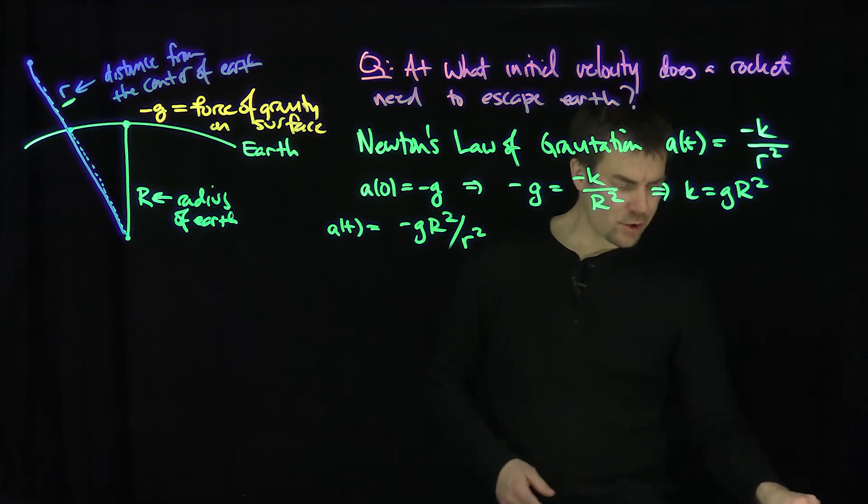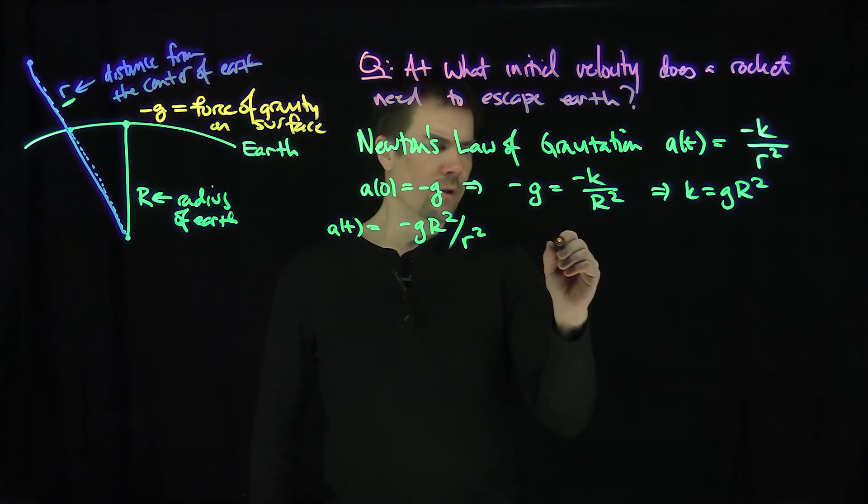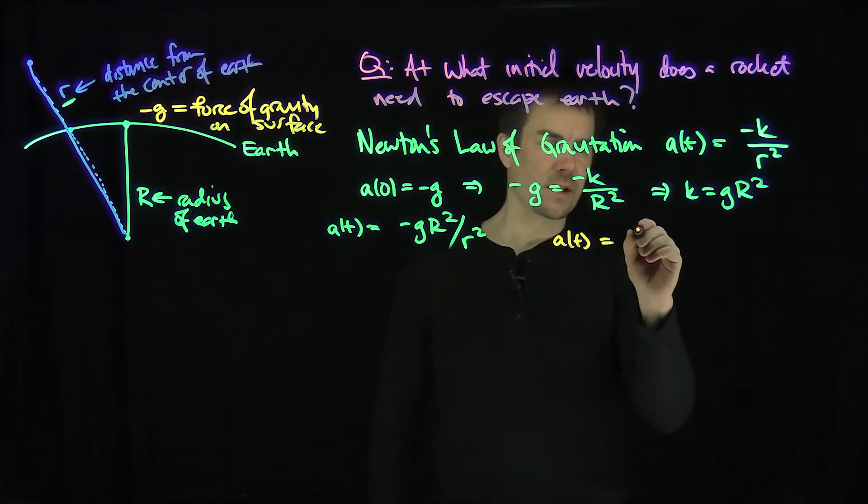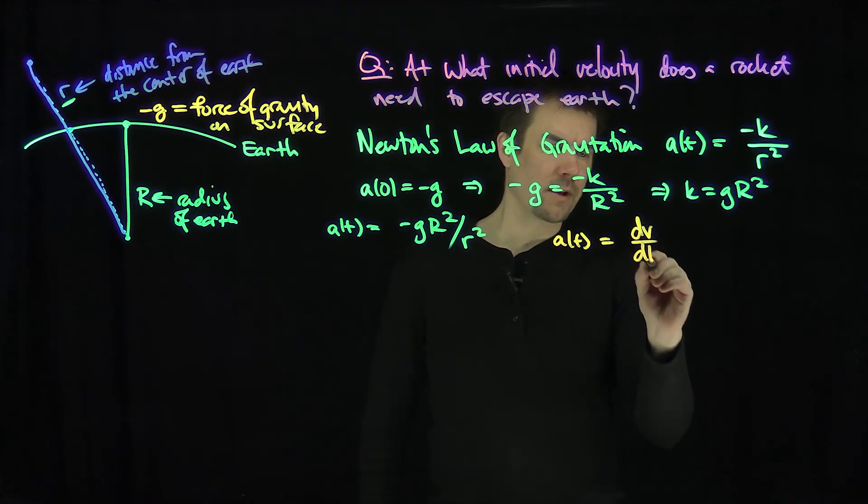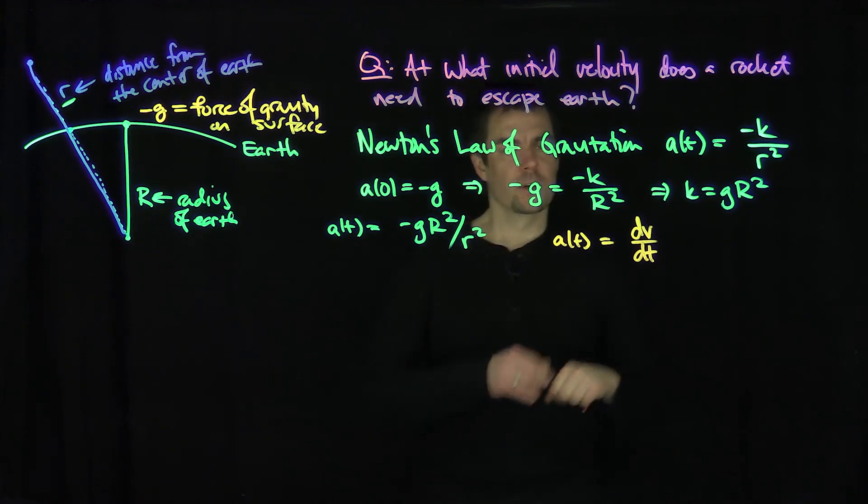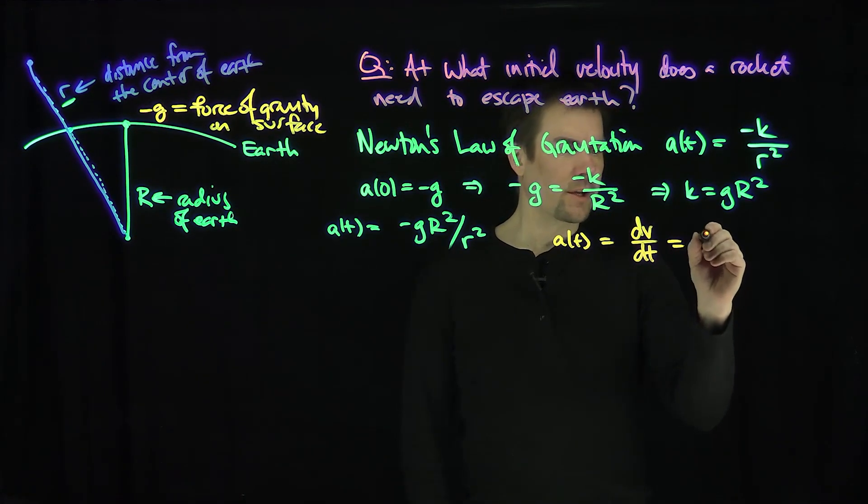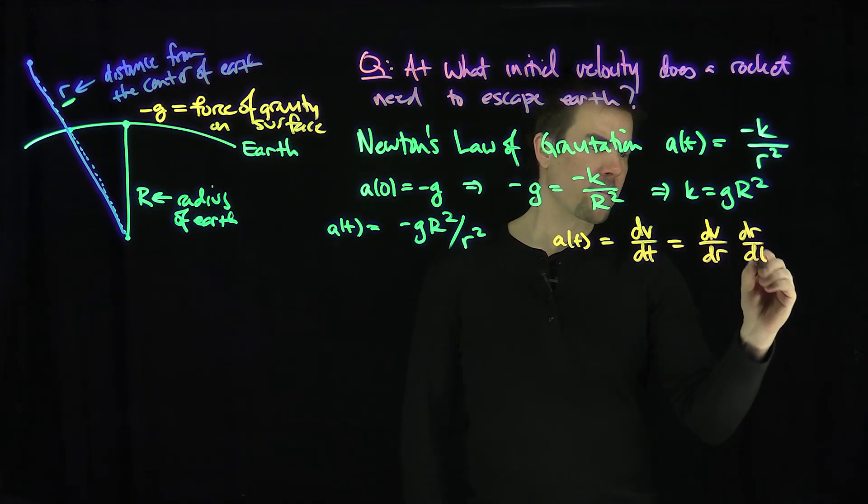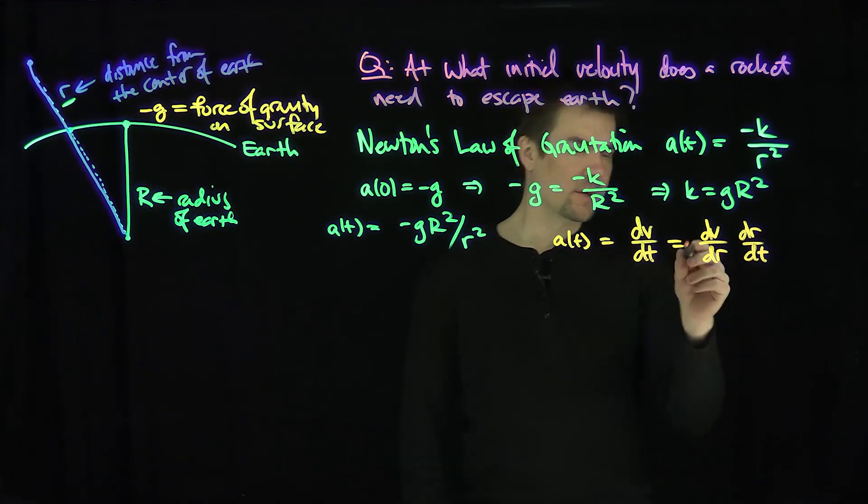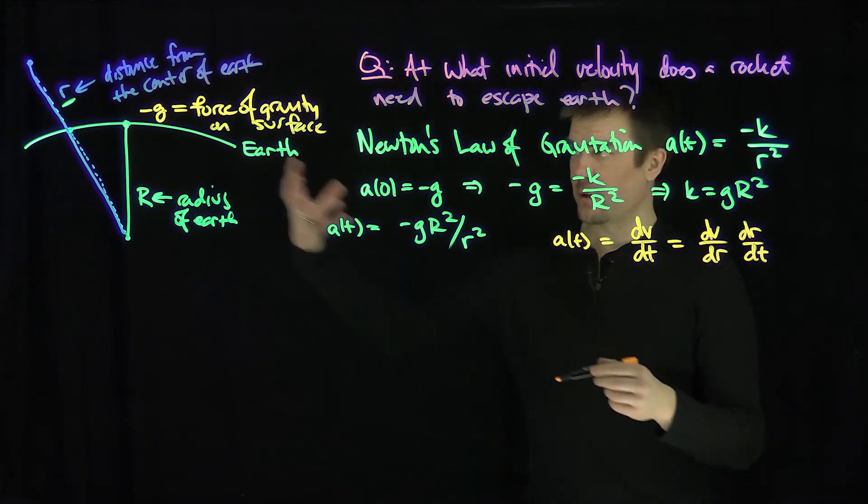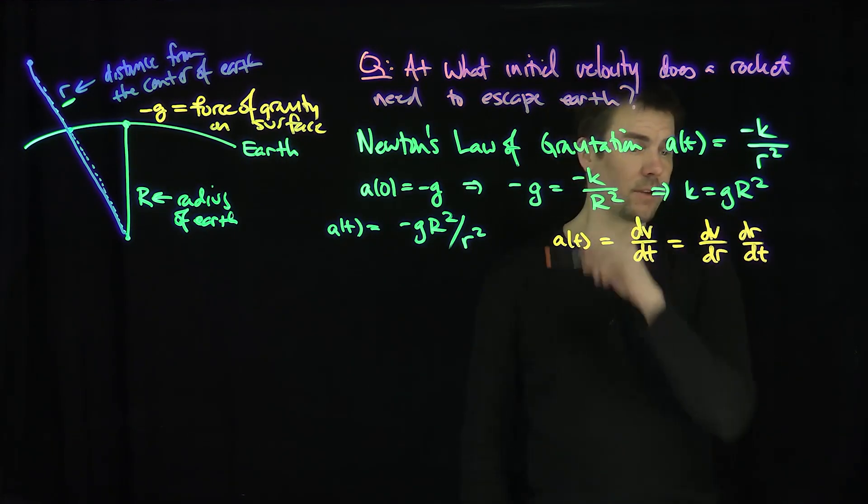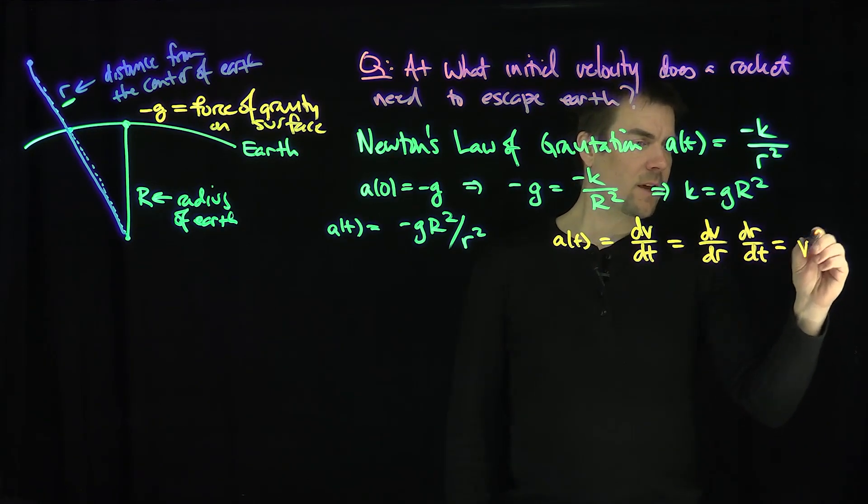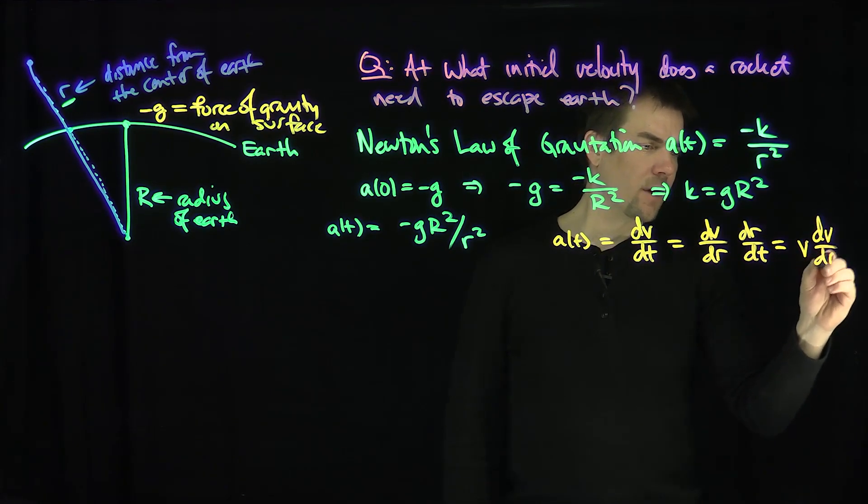Now, here's where we're going to use the chain rule. By the chain rule, we know that a(t) is going to be the derivative of the velocity, dv/dt, where v is the velocity of the rocket. And by the chain rule, this is really dv/dr times dr/dt, and dv/dr is just the derivative of the velocity with respect to the radial variable r, and dr/dt is exactly just equal to v. So it's going to be v times dv/dr.